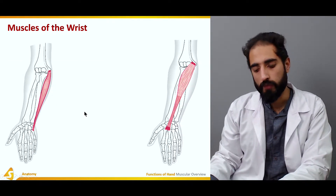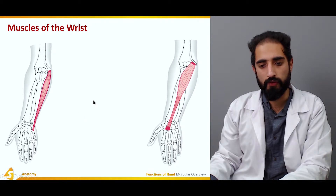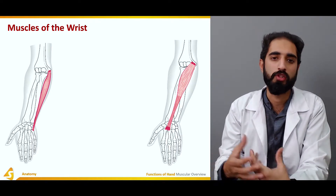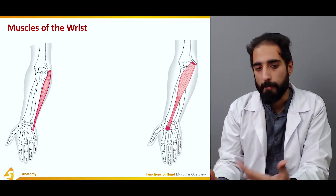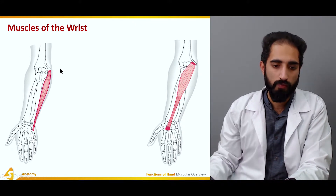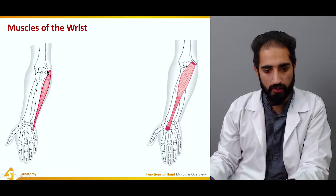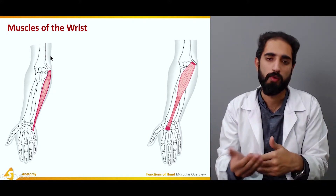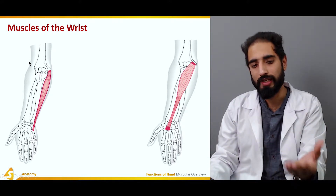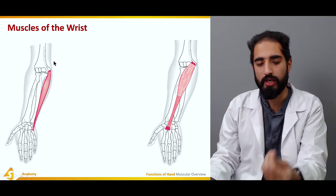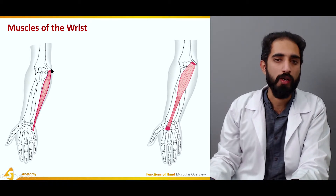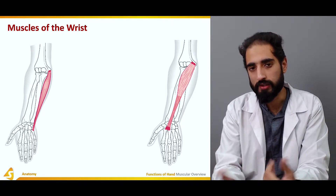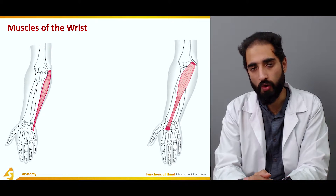The three flexors — flexor carpi ulnaris, flexor carpi radialis, and palmaris longus — all share the same site of origin at the medial epicondyle of the distal humerus. There may be slight differences in exact attachment, but broadly they share a common proximal attachment. When there is inflammation at this common attachment site, the condition is termed medial epicondylitis, or golfer's elbow.